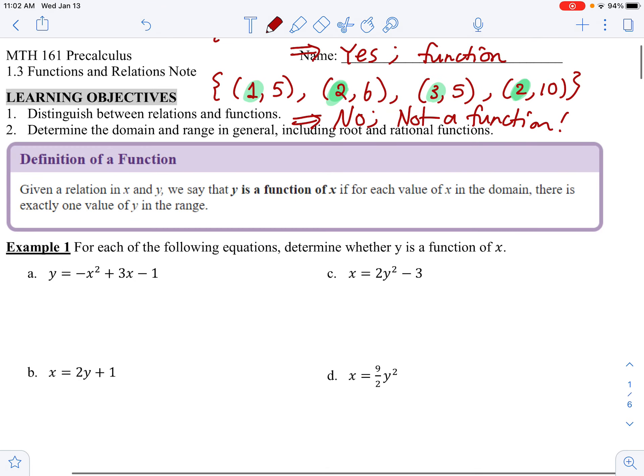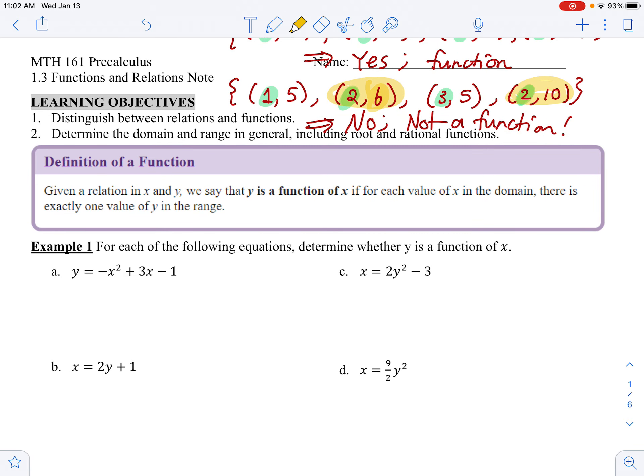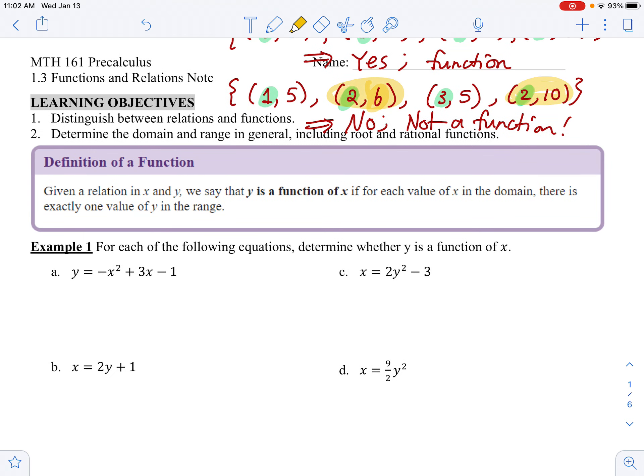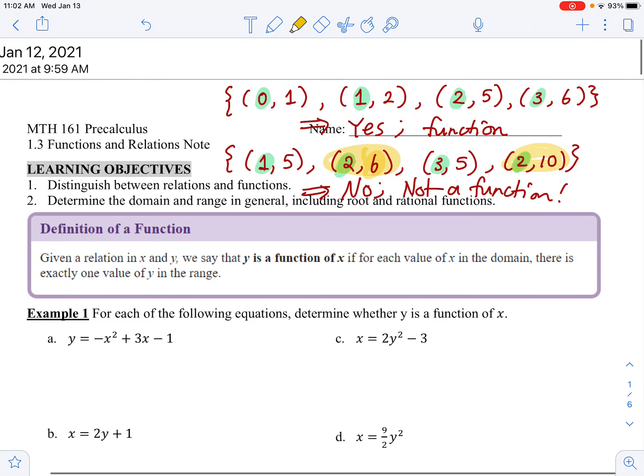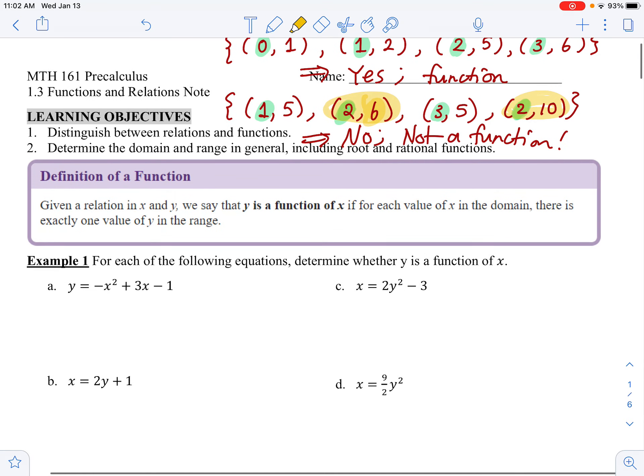If I read the definition of function right here, given the relation in x and y, we say that y is a function of x if for each value of x in the domain, there is exactly one value of y in the range. And that wasn't true for this relation. We had an x value of 2 that was paired with both 6 and 10 at the same time.